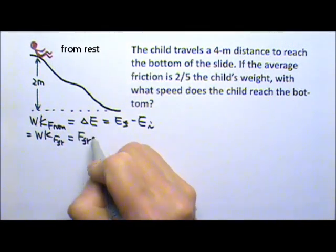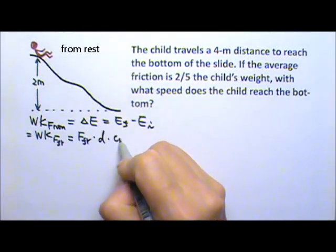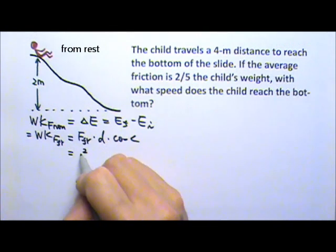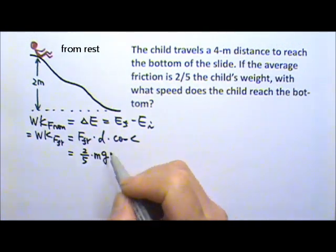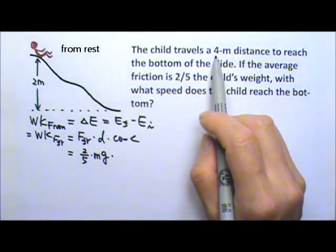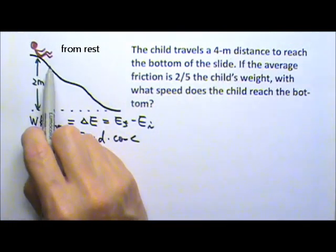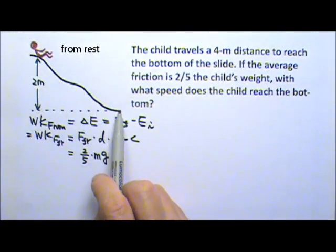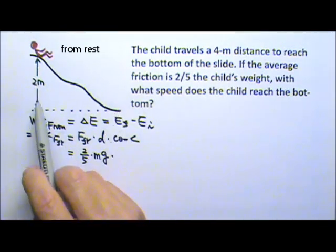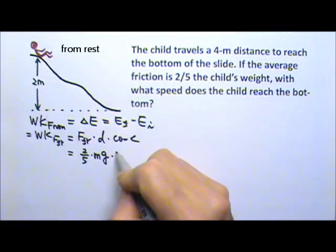So this is the frictional force times the displacement times cosine the angle between the two. The frictional force is 2 fifths the child's weight, mg. We don't know the mass, but hopefully the mass will cancel. Friction does work over the distance, 4 meters. Friction takes energy away and turns it into heat over this entire distance, 4 meters. The distance or the displacement here is not the 2 meters height. So the D over here is 4.